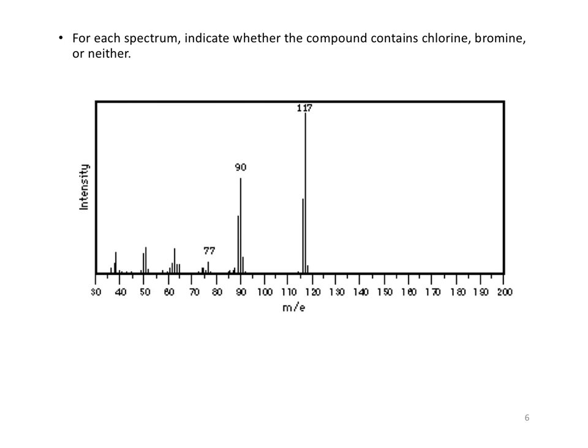All right, last example, again, they're asking us if we have a chlorine or bromine or neither. And so in this case, I don't see an M plus 2 peak at all. So this is telling me I don't have either a chlorine or a bromine.